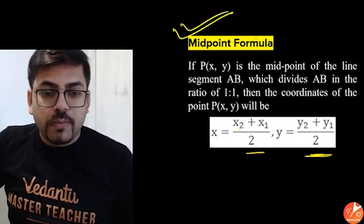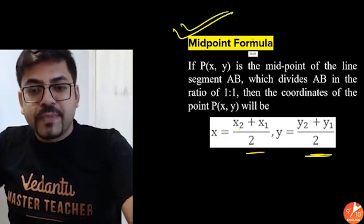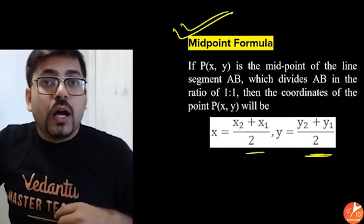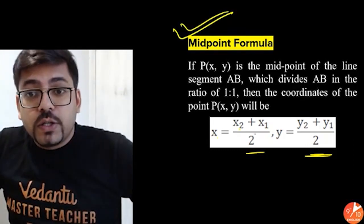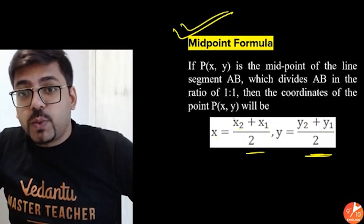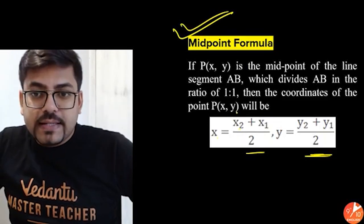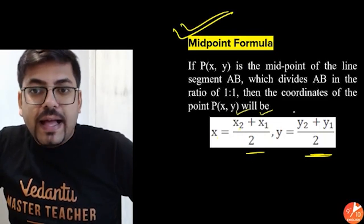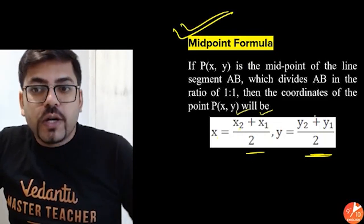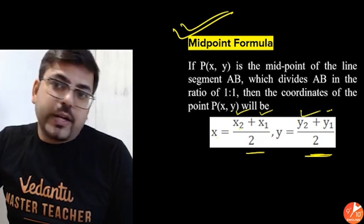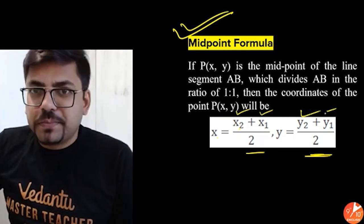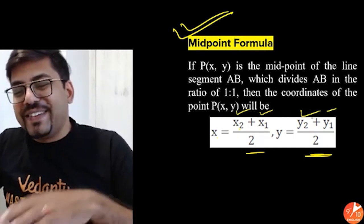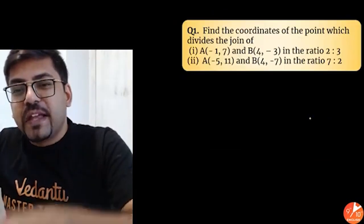So you arrive at the formula: X equals (X2 plus X1) by 2, and Y equals (Y2 plus Y1) by 2. That is the average or mean of both the coordinates. Just remember this: the midpoint of a line joining X1, Y1 and X2, Y2 is nothing but the average of the X coordinates and the average of the Y coordinates. Easy, simple one.